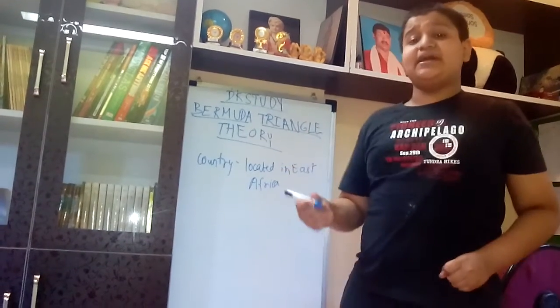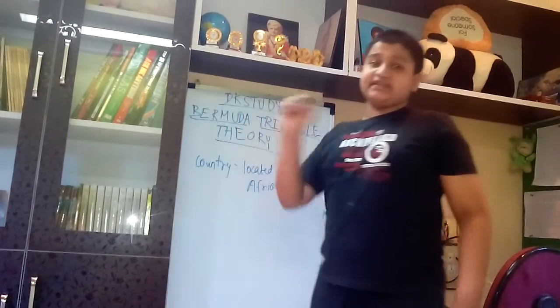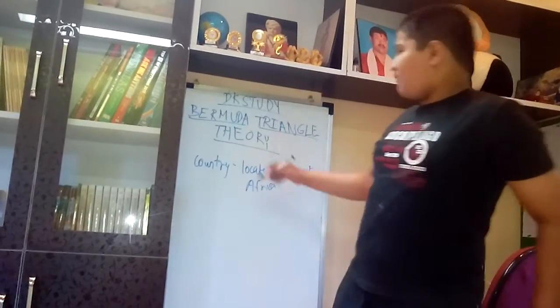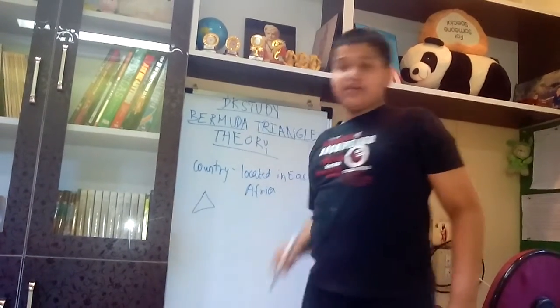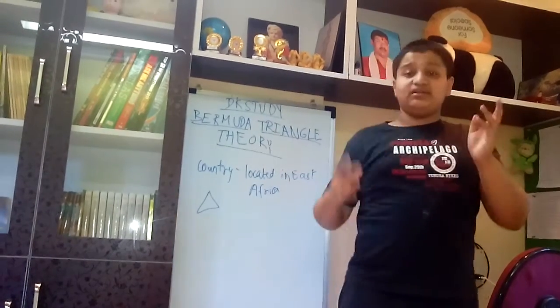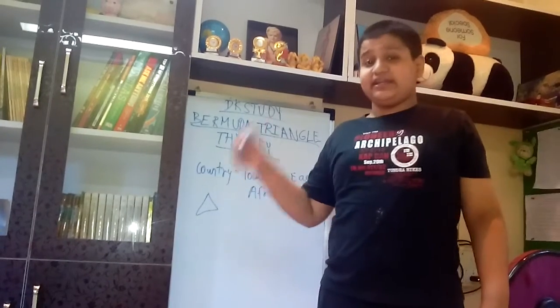But why am I telling you about this country? Because this theory is incomplete without this country. So what is the Bermuda Triangle? As we know that East Africa suggests that this country may be close to the sea, and actually it is.